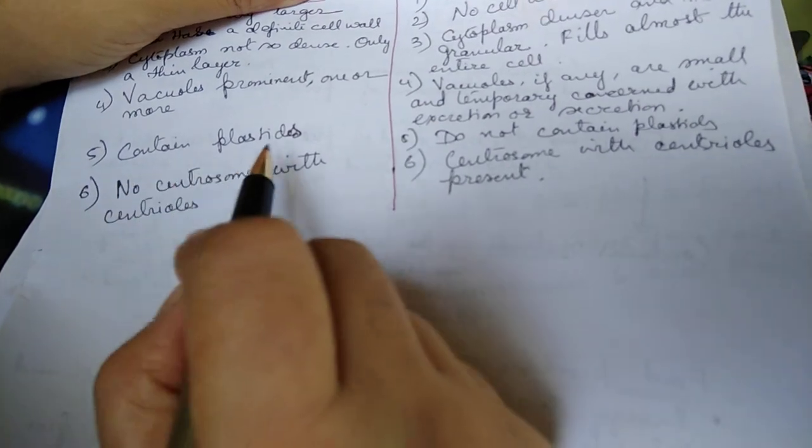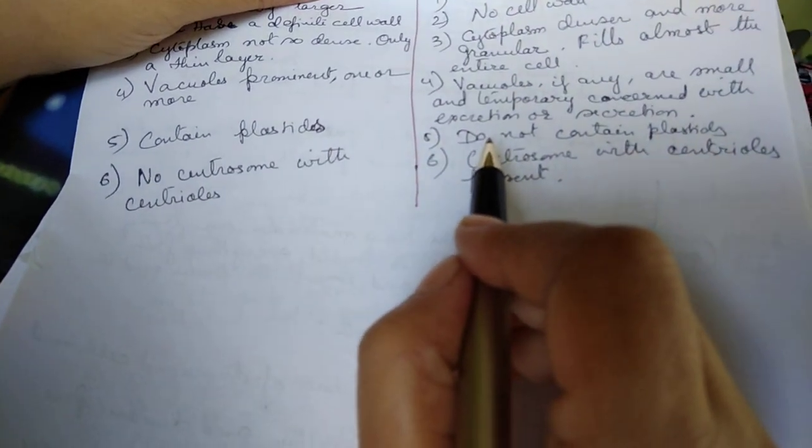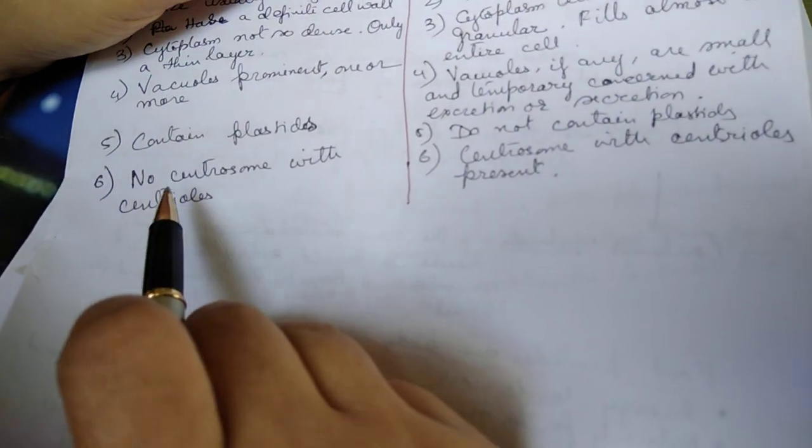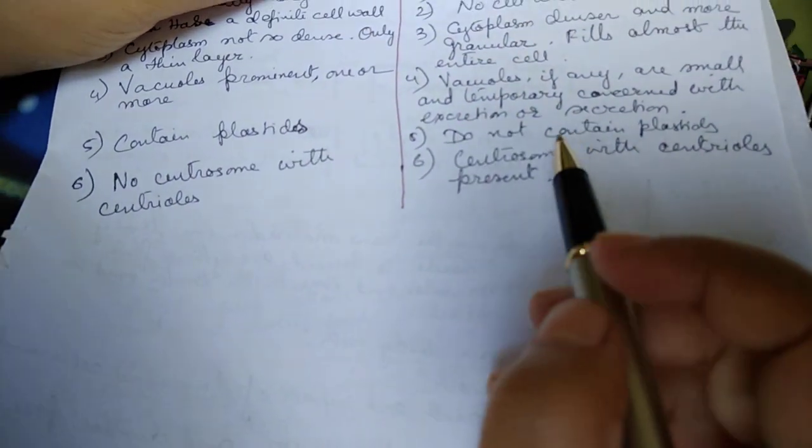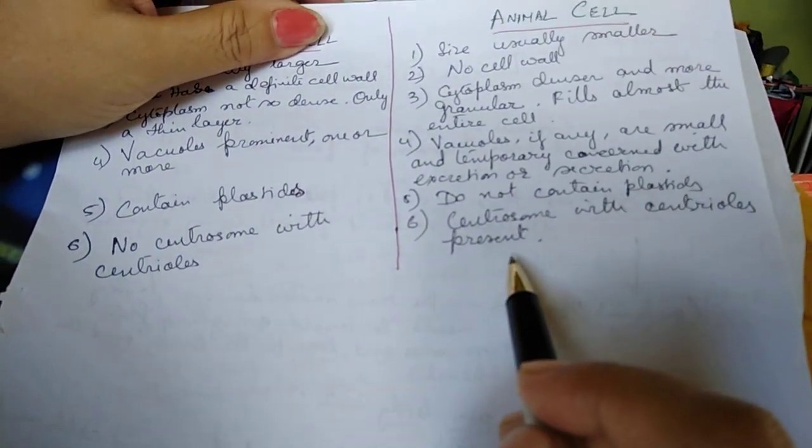Plant cells contain plastids, animal cells do not contain them. Plant cells have no centrosome with centrioles, but animal cells have centrosome with centrioles present.